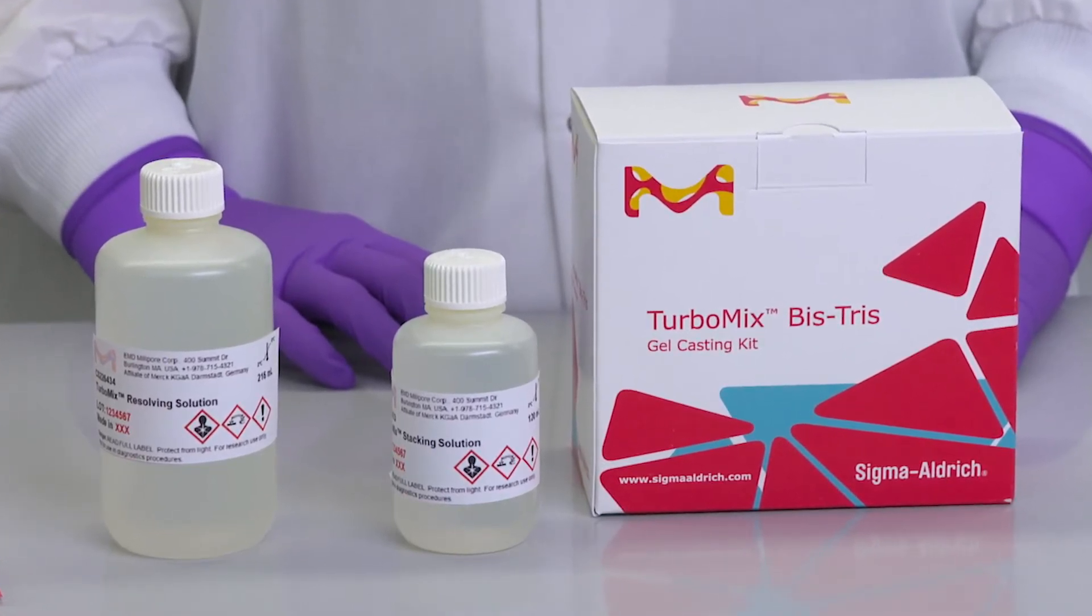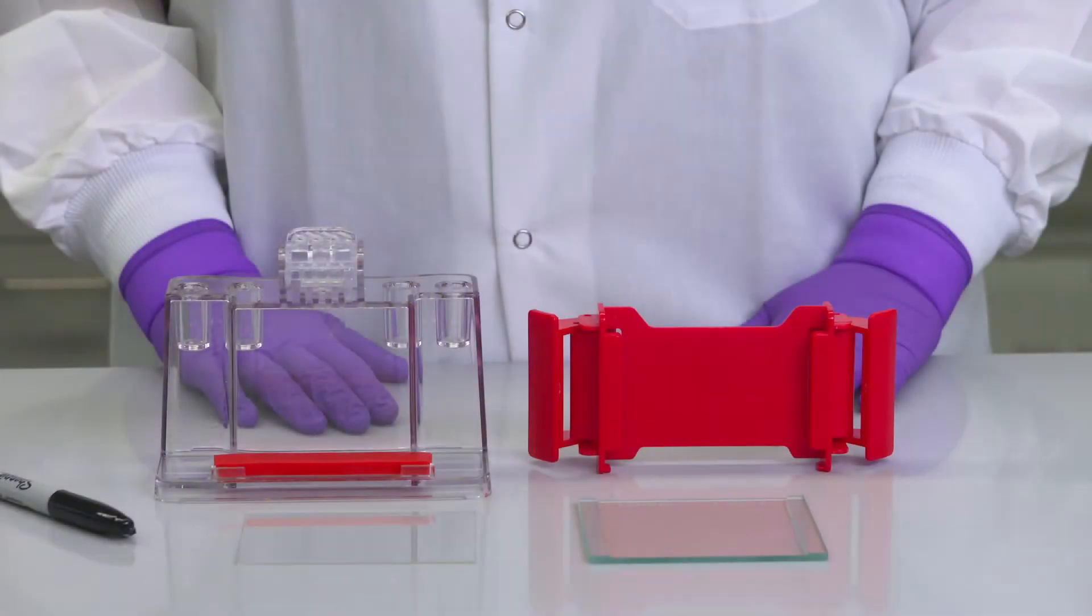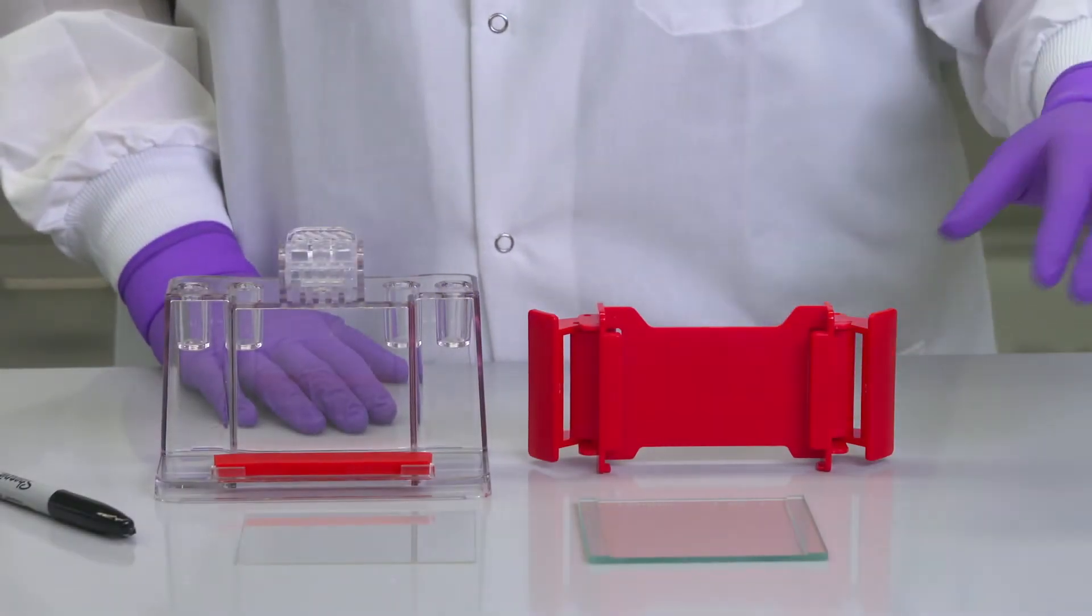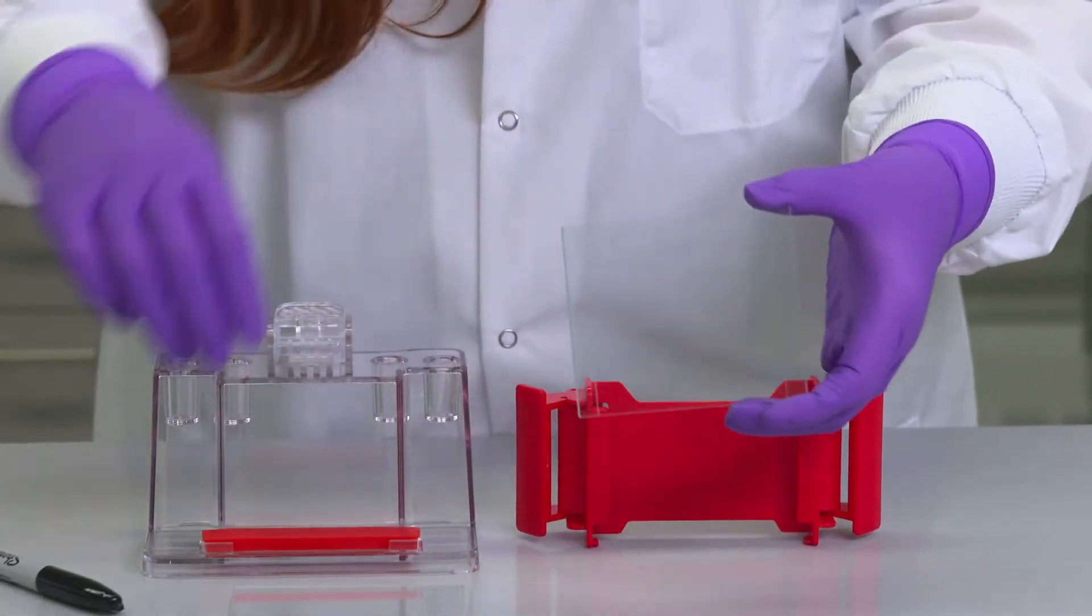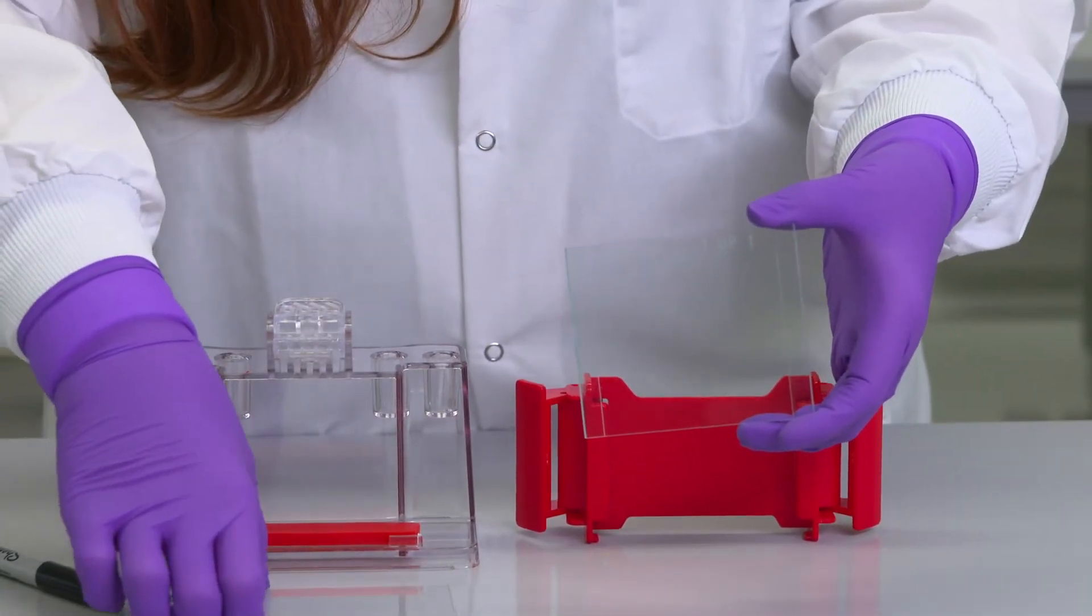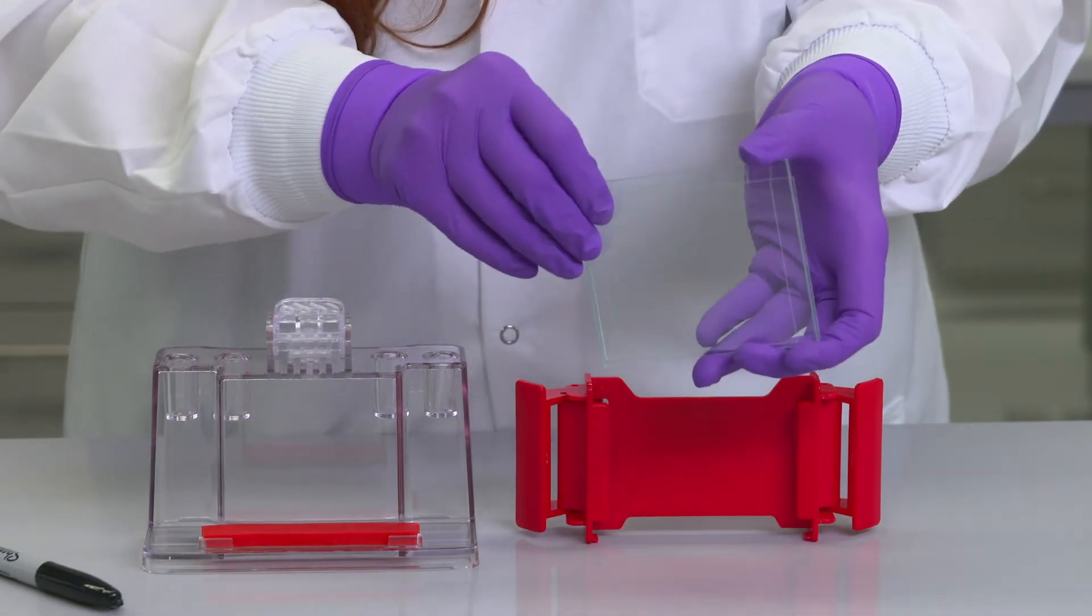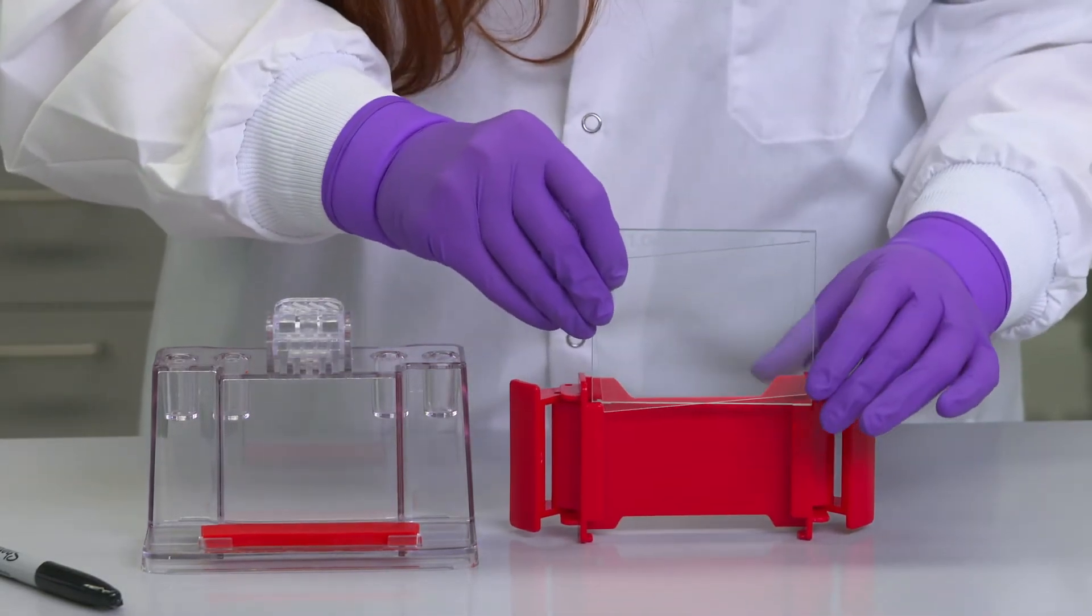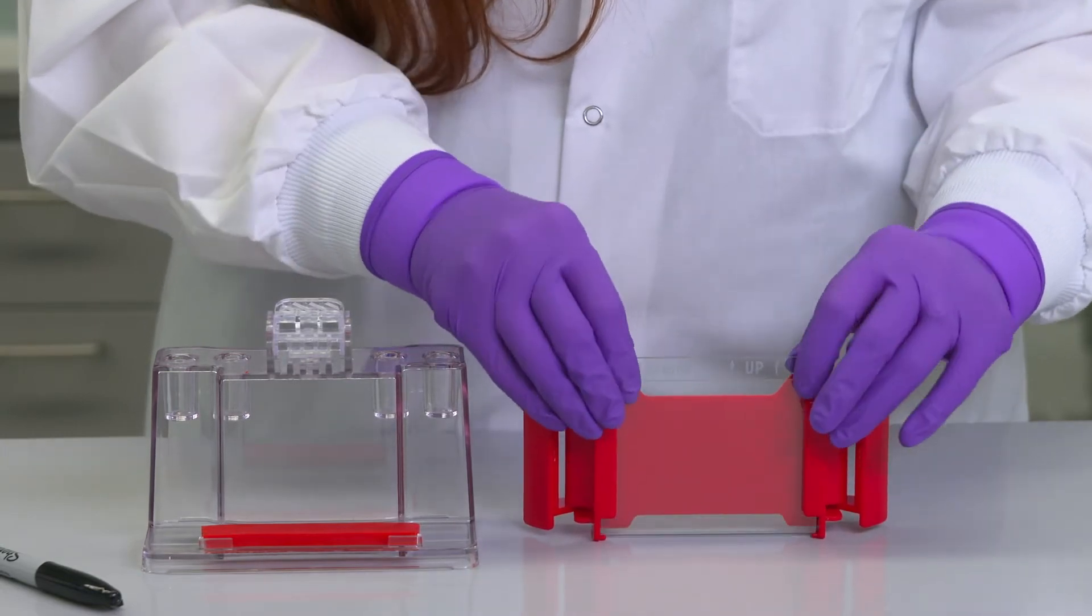I'll demonstrate the quick cast protocol now. Before I start, I'll assemble my casting stand and cassette, making sure that the glass plates are free of any chips that may cause leaking. These solutions can be used with any individual casting equipment. Here I'll be using a mini gel cassette with a one millimeter thickness.